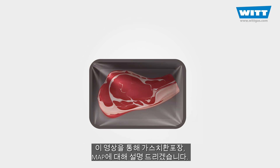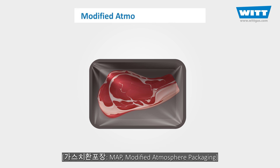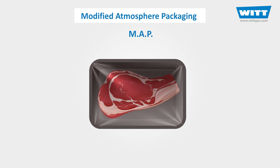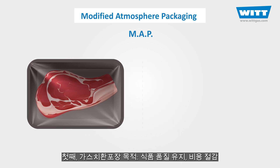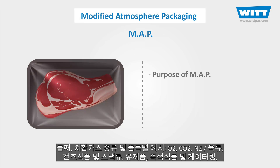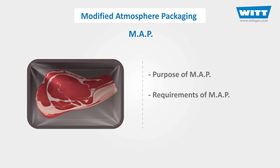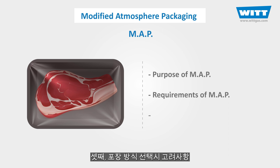In this video we're going to learn about a modern method of food packaging called modified atmosphere packaging, or simply MAP. First we will talk about the purpose of this method and then we'll take a deeper look at its requirements. Finally we'll consider some examples in our further understanding of MAP.